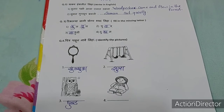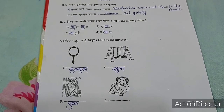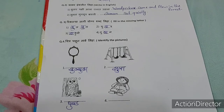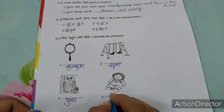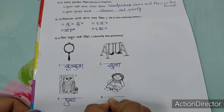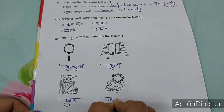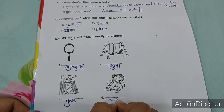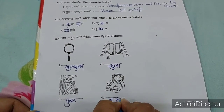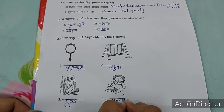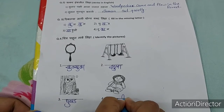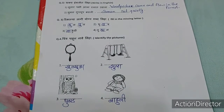And what can you see in the last picture? There is a doll. So write: Bahuli. Bahuli means doll.